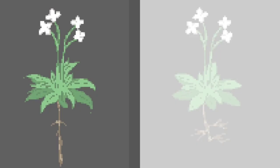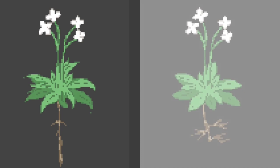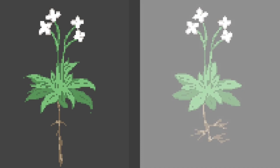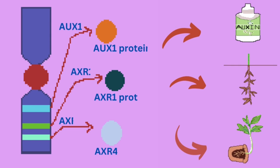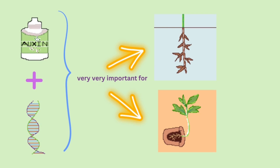It was seen that there was root elongation in auxin-resistant plants compared to wild type plants. Hence, it was noted that the reduction in auxin sensitivity results in root elongation. It was proved that AXR4, AXR1, and AUX1 gene products are important for normal auxin sensitivity, gravitropic response in roots, and lateral root formation. The experiment also proved that the mechanism of auxin action during root gravitropism and the formation of lateral roots is different. Therefore, we could see the importance of genes in root development and gravitropism in Arabidopsis thaliana.